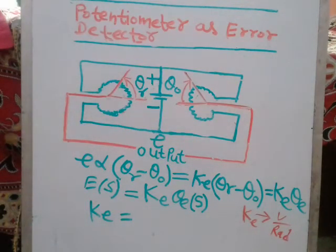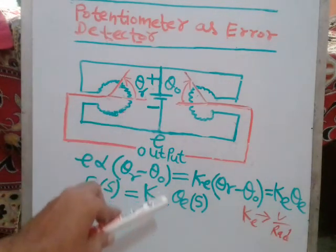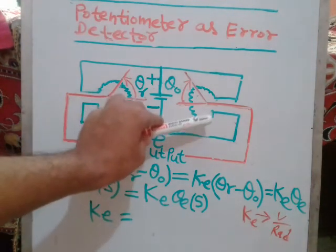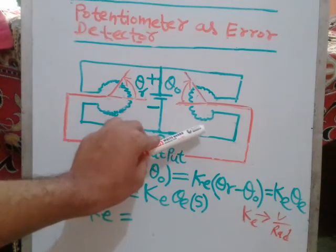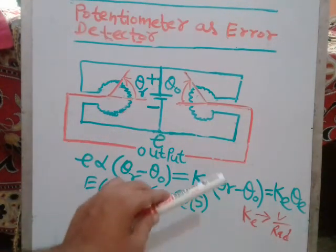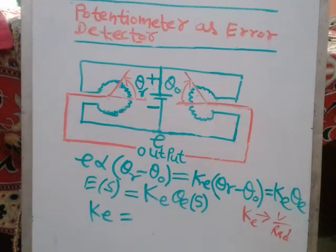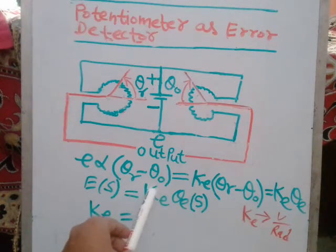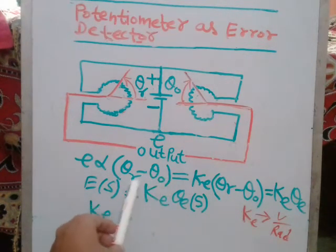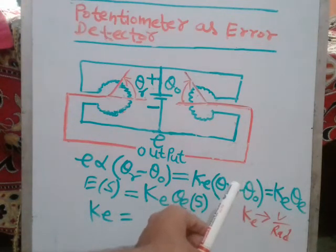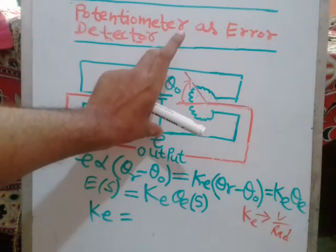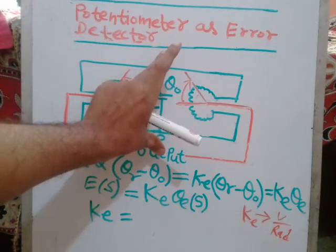The potential difference can be measured across the potentiometer, and the multimeter gives a reading of that potential difference. Now if you rotate the second knob in the anti-clockwise direction, you get a negative reading, meaning the error is in the negative direction. Whenever there is any angular difference between theta_r and theta_naught, you get an error theta_e.